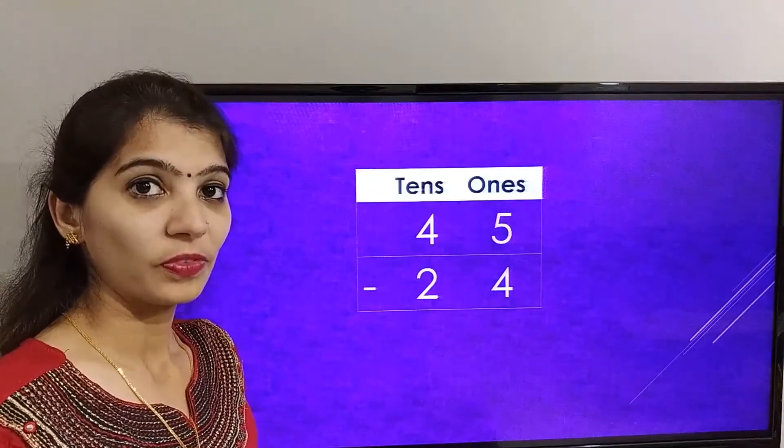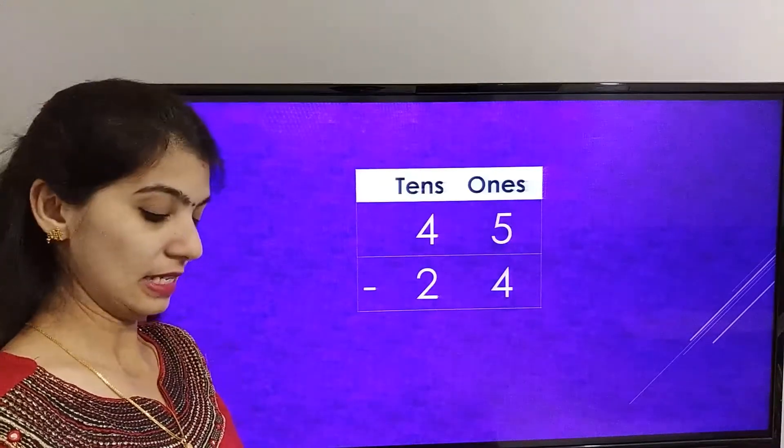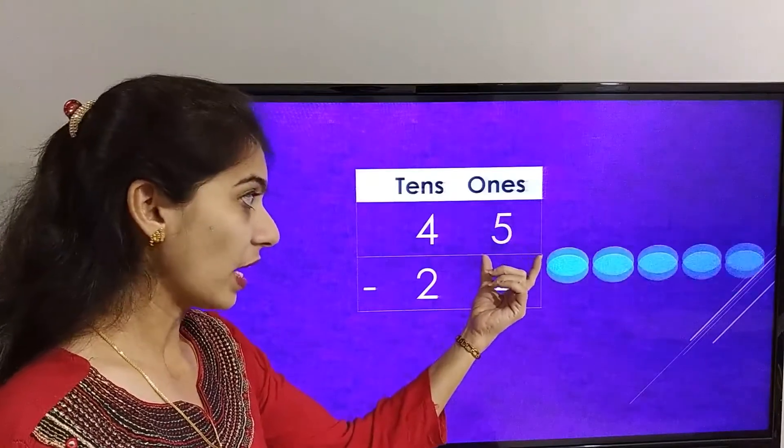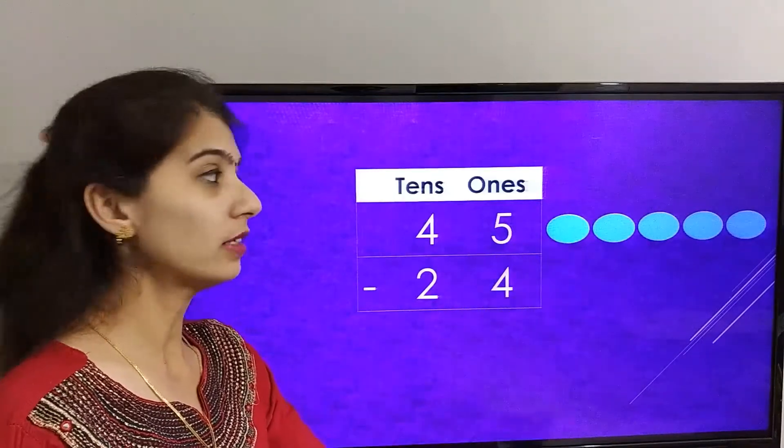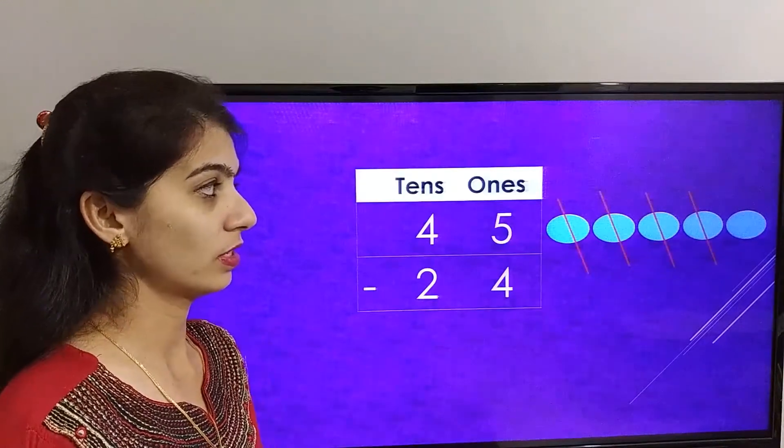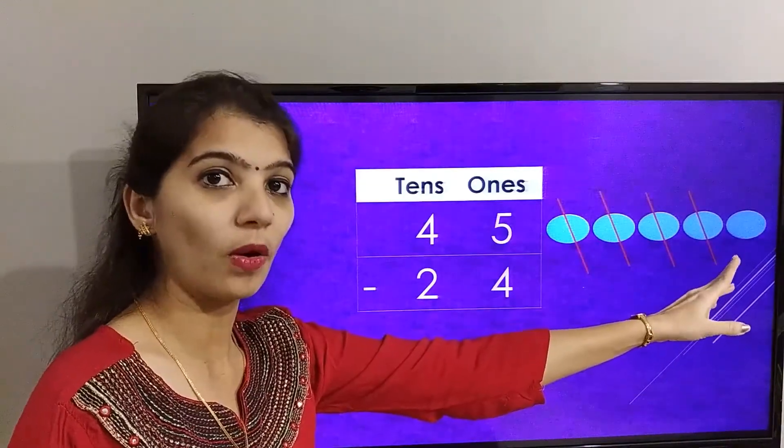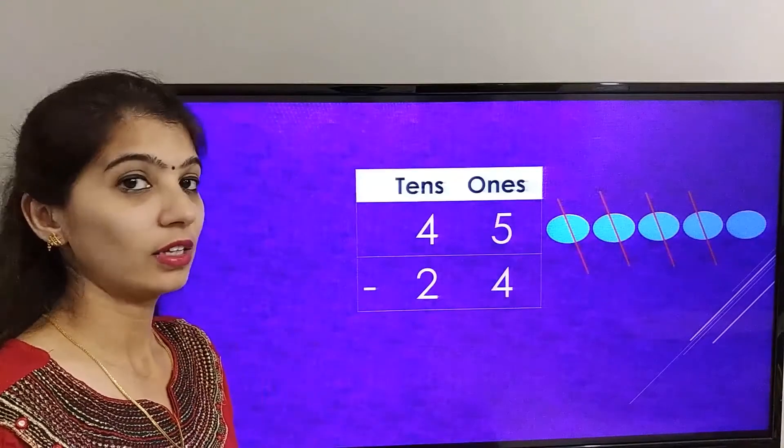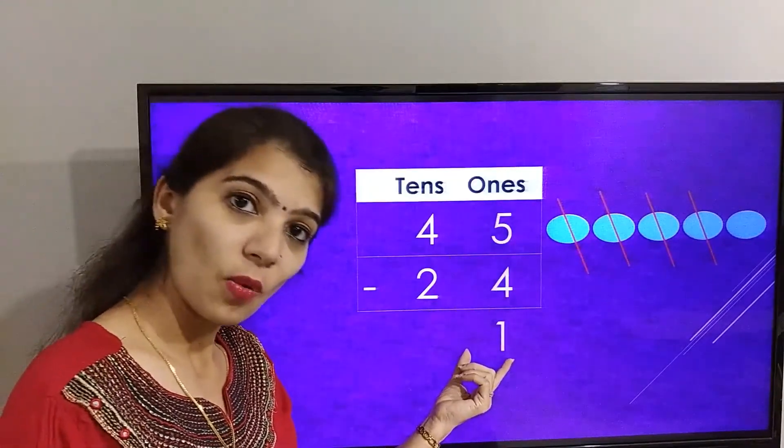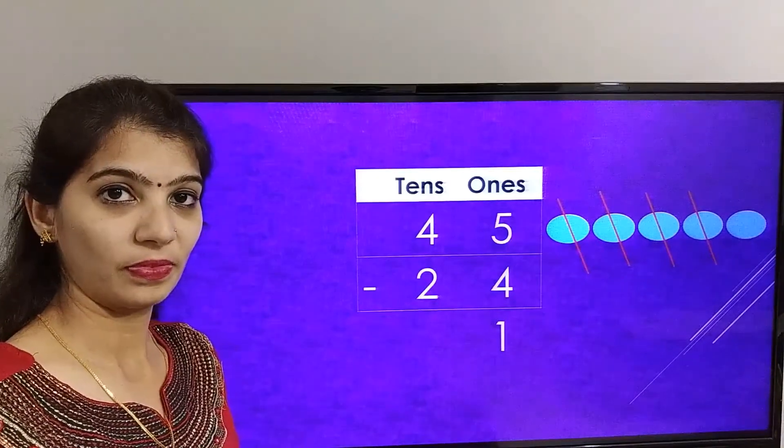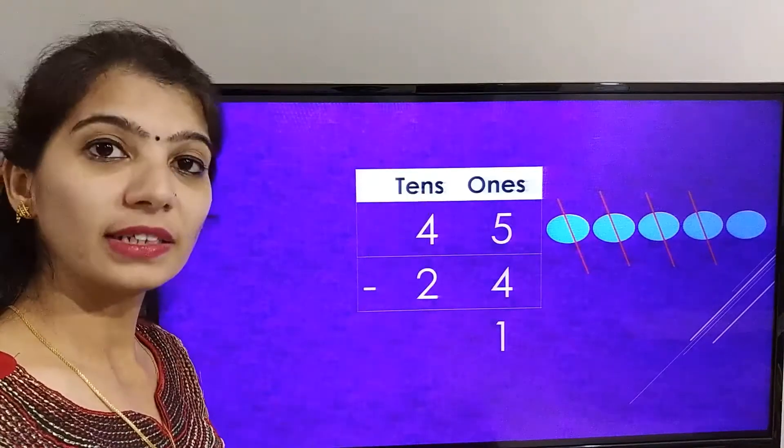So the number in the ones place is 5 minus 4. Let's cut 4 balls. The remaining ball is 1, so the answer in the ones place is 1. Now let's solve the tens place.